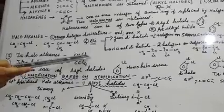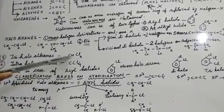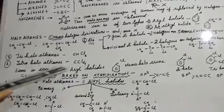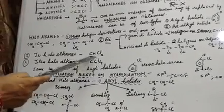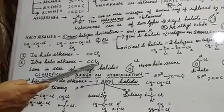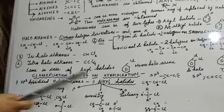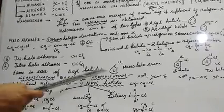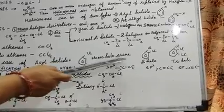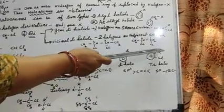For Trihaloalkanes, Chloroform (CHCl3) is the example — three Chlorine atoms in the same molecule. Tetrahalo means four Chlorine atoms in one molecule. The same classification applies in Arylhalides as well: Monohaloarene, Dihaloarene, and Trihaloarene depending on the number of Halogens attached.